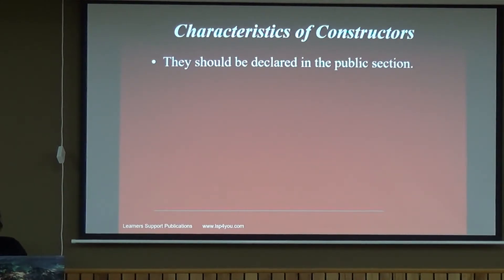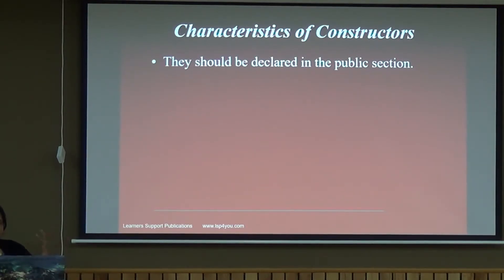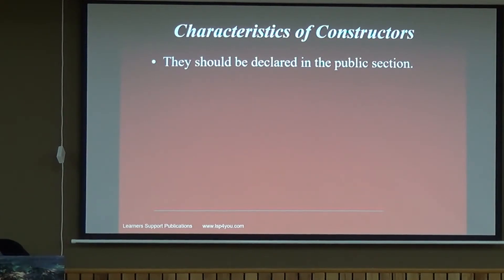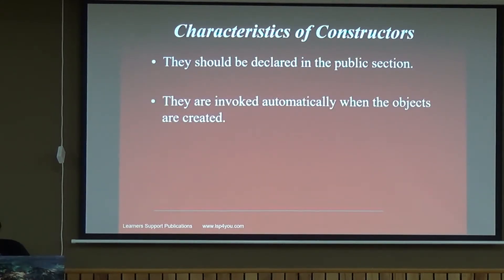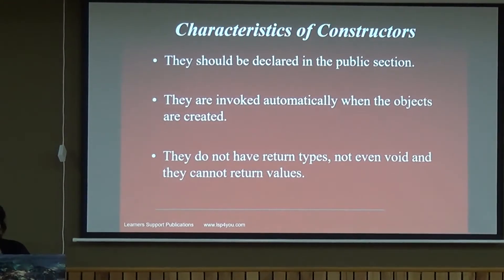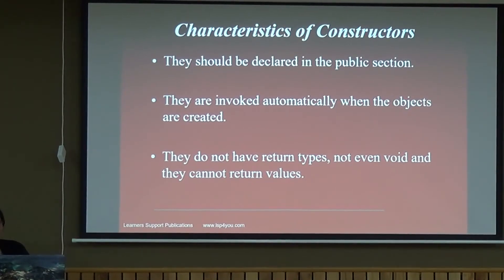Before showing the coding part, go through the characteristics of constructors. They should be declared in the public section — it is important for a constructor to be a public member. You can declare a constructor in the private section, but when you try to create an instance of that class, it will not be created. Constructors are invoked automatically when objects are created, and they do not have any return type — not even void. You do not write any return type when defining a constructor, just the name of the constructor, which is the same as the name of the class.